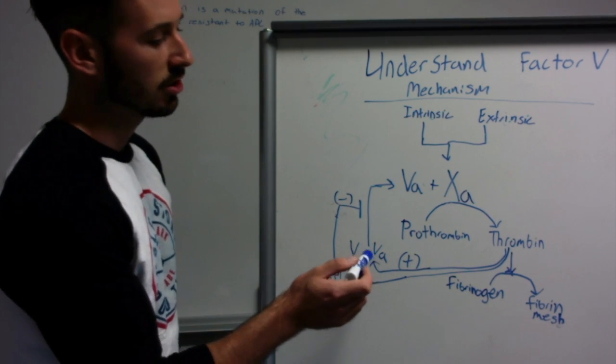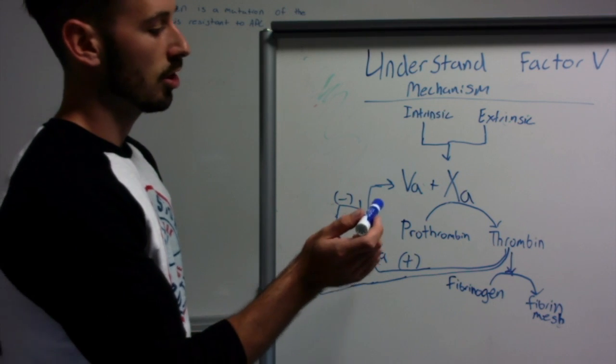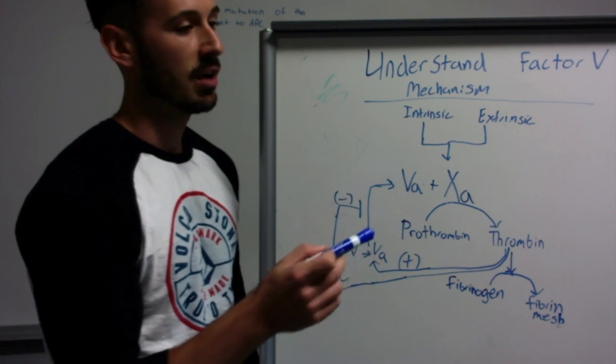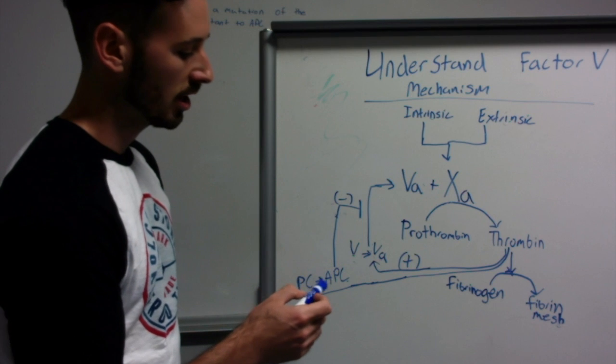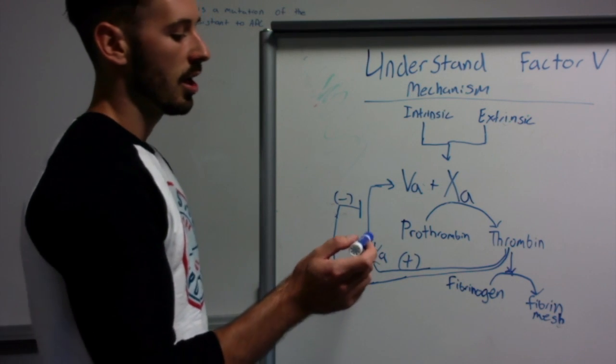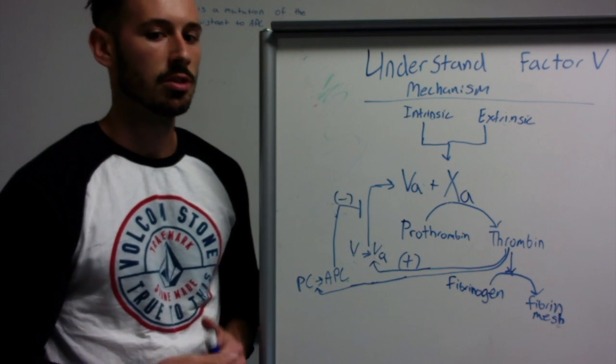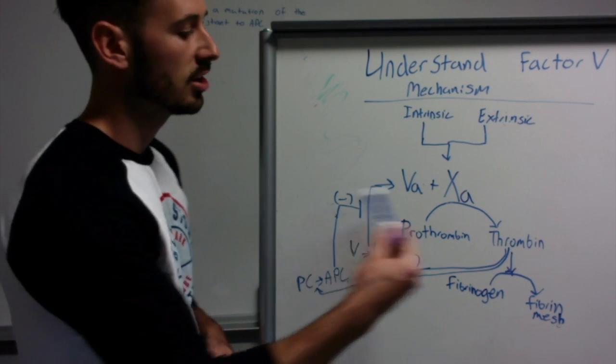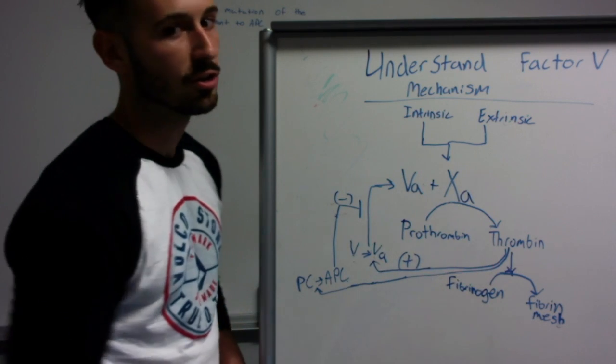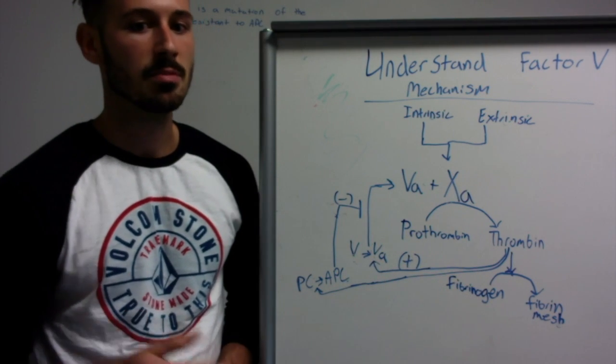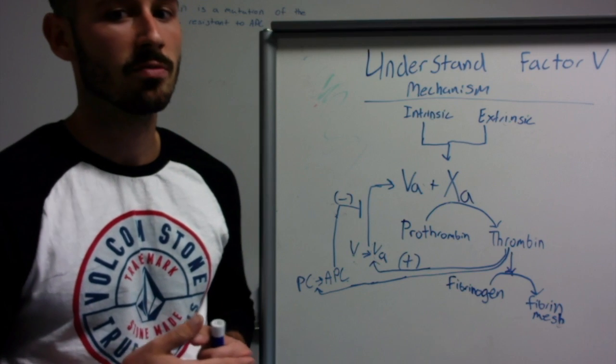But the mutation that occurs due to Factor V Leiden prevents protein C from inactivating Factor V, and without this inactivation, the clotting cascade continues to go longer than it's supposed to. And that's the main problem associated with Factor V Leiden.